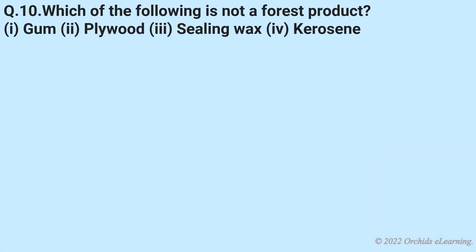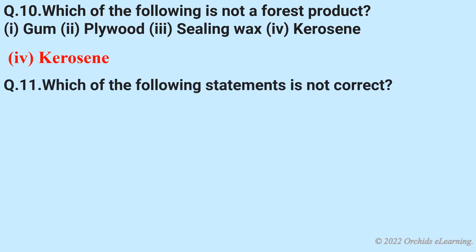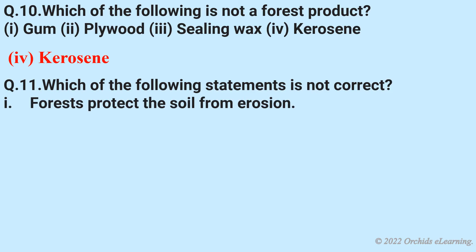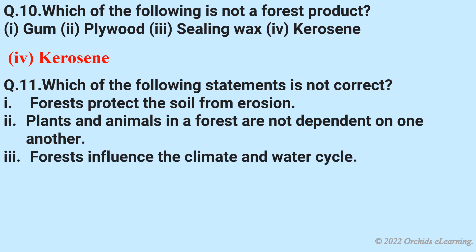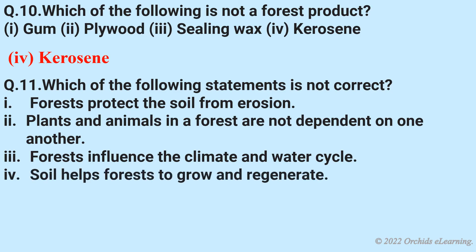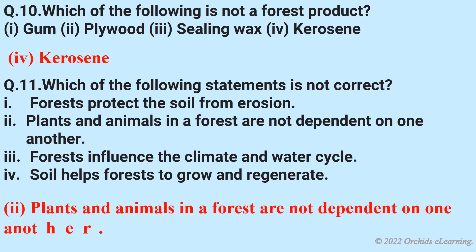Which of the following is not a forest product? Answer: Kerosene. Which of the following statements is not correct? Options: Forests protect the soil from erosion. Plants and animals in a forest are not dependent on one another. Forests influence the climate and water cycle. Soil helps forests to grow and regenerate. Answer: Plants and animals in a forest are not dependent on one another.